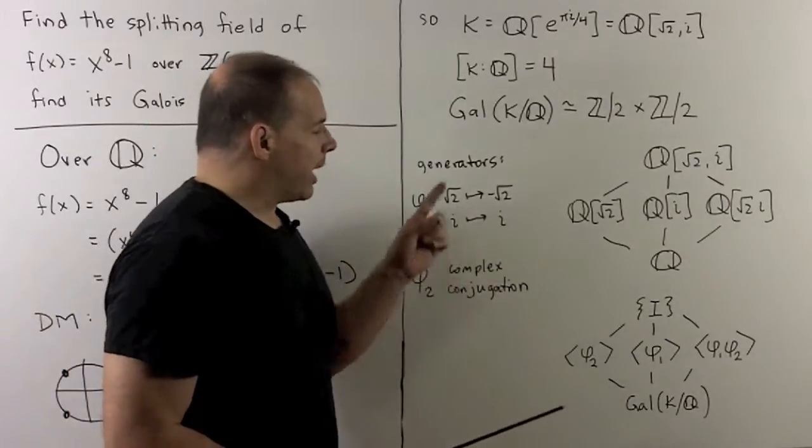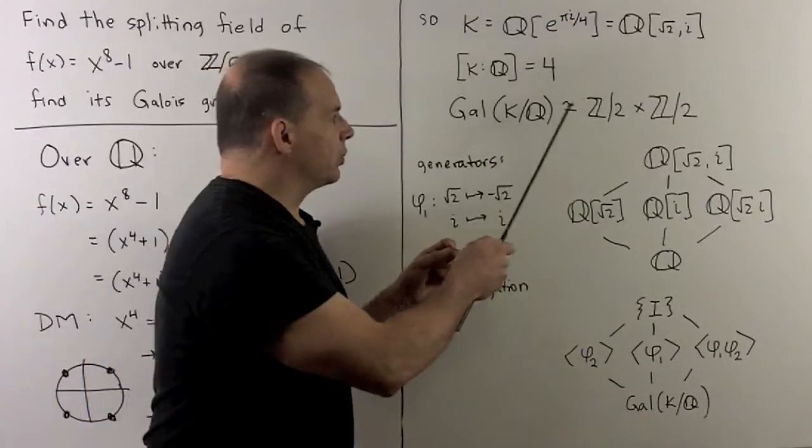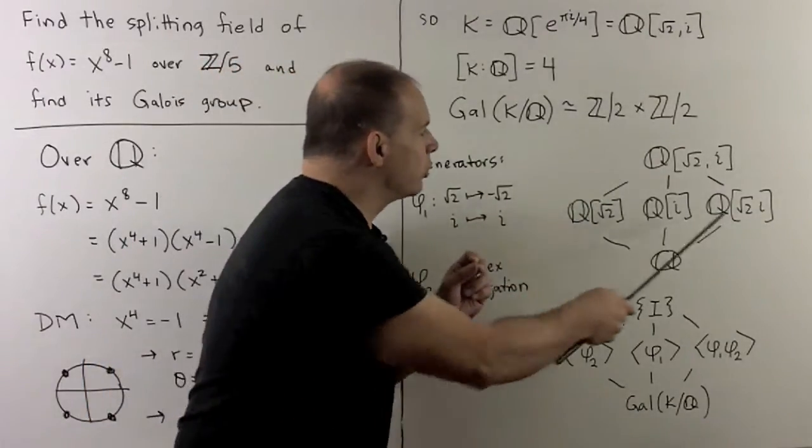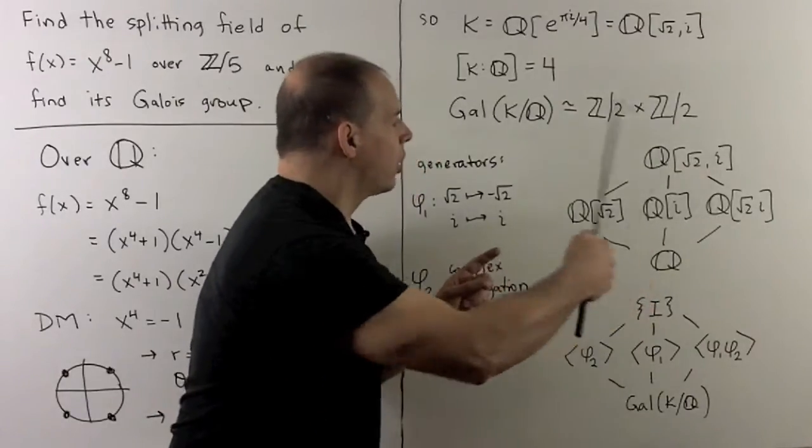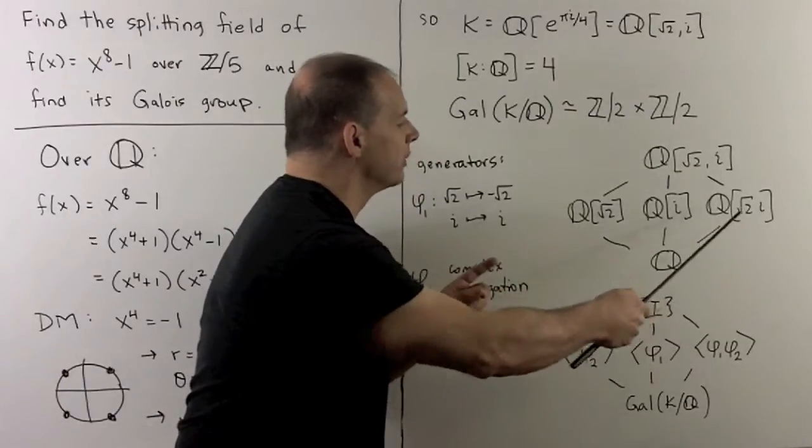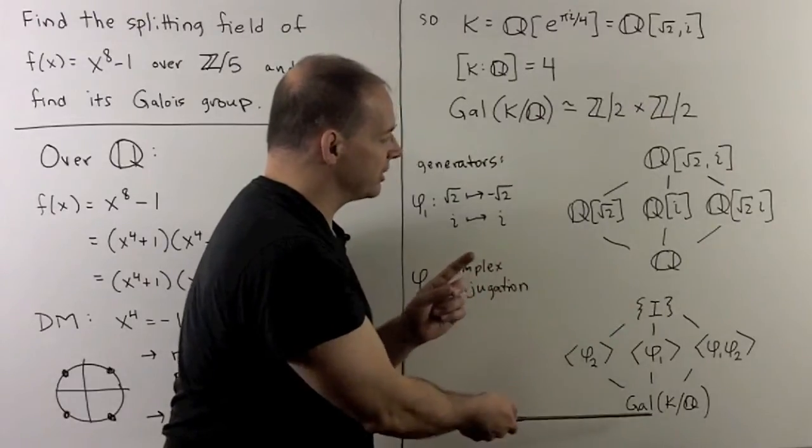Now, for the Galois correspondence, in Z2 cross Z2, we would have three subgroups of order 2. And then this is how we line up corresponding subfields. So here's our Galois correspondence in this case.